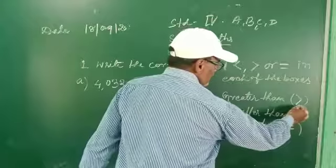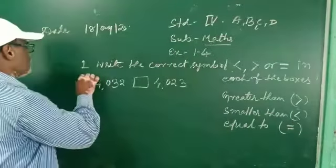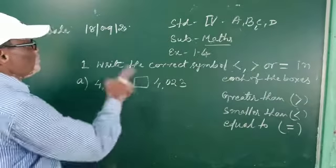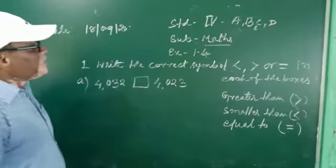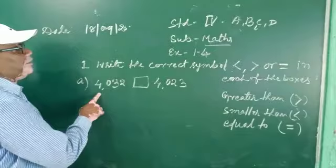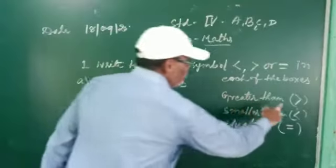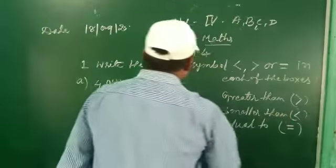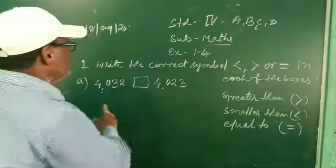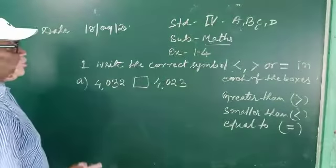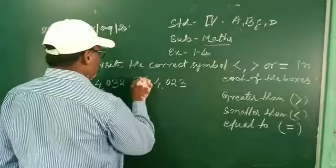Looking here: greater than, smaller than, and equal to. Now, in portion A, two numbers are given. Compare both numbers — which is greater, the first number or the second number? If the first number is greater, put the greater than sign. If the second number is greater, put the smaller than sign. Here, the first number is greater, so you put the greater than sign, like this.